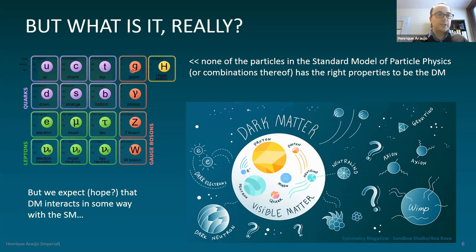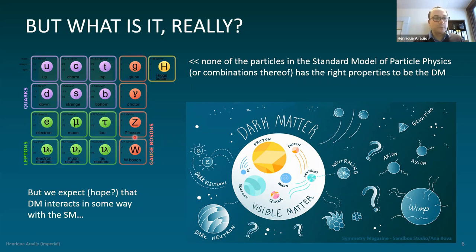Dark matter doesn't interact with gluons either — those are the mediators of the strong nuclear force that keep nuclei bound together. If it did, we would have found strange particles, and we haven't. However, there is a possibility that dark matter may interact with the Z boson, the W boson, and maybe even the Higgs boson — the mediators of the weak nuclear force, which is responsible for radioactive decay. As the name implies, it's a very weak interaction, which would justify why we haven't seen it yet.